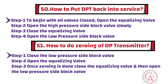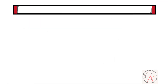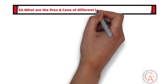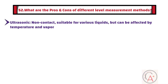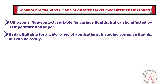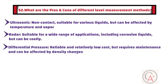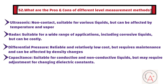Question 52: What are the advantages and disadvantages of different level measurement methods? Each level measurement method has its own set of advantages and disadvantages. For example, ultrasonic is non-contact and suitable for various liquids, but can be affected by temperature and vapor. Radar is suitable for a wide range of applications including corrosive liquids, but can be costly. Differential pressure is reliable and relatively low cost, but requires maintenance and can be affected by density changes. Capacitance is suitable for conductive and non-conductive liquids, but may require adjustment. The choice of level measurement method depends on the specific application's requirements and conditions.